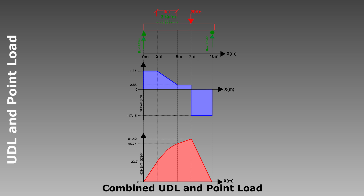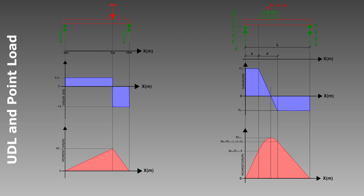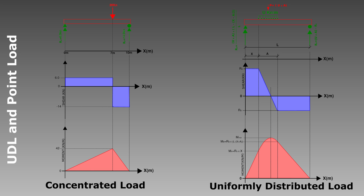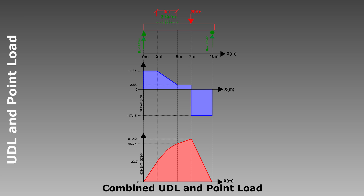The same principles apply — to simplify, split the problem into its two separate components: calculate the UDL case (shown on the left) and the point load case (shown on the right) separately, then superimpose the two diagrams to get the final result. Checking our answer: both shear force and bending moment diagrams sum to zero, the peak bending moment of 51.42 kNm occurs where the shear force crosses zero, and only the section under the UDL is non-linear.